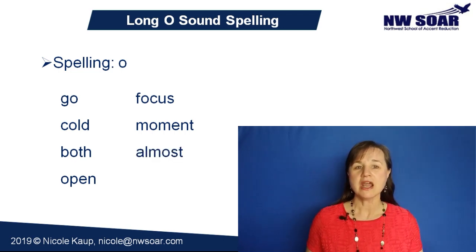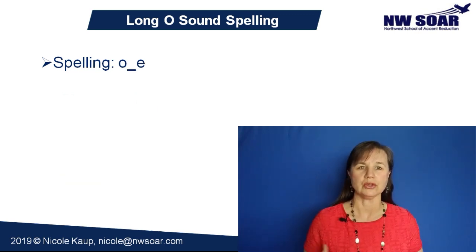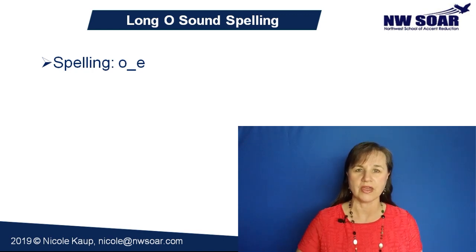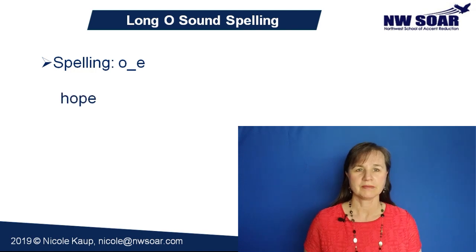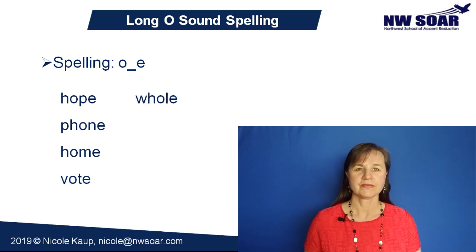Another possible spelling is O-E with a consonant between the two letters — various different consonant letters can come between the O and the E. Here are some examples: hope, phone, home, vote, hole, stone, and alone.